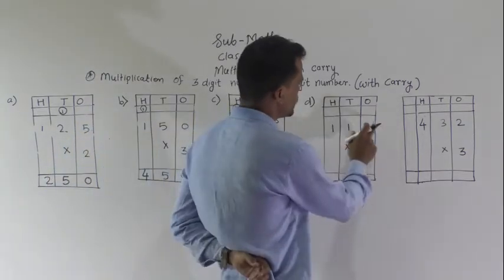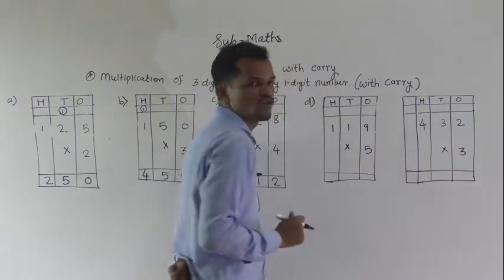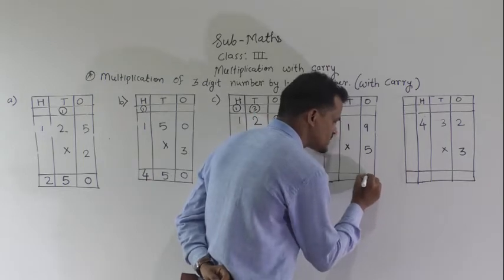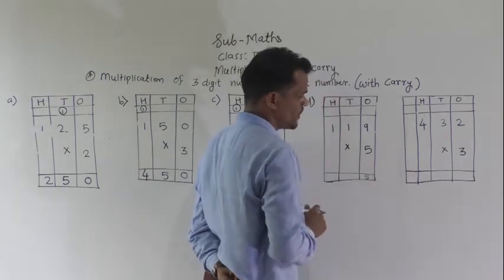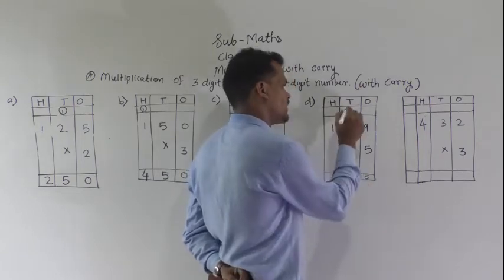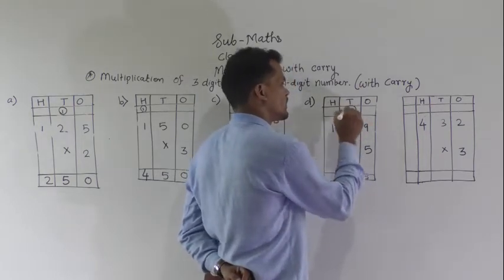Next example: 119 multiply by 5. 5 times 9 is 45, means write the last digit of that number here. Write 5 here and 4 carry forward.